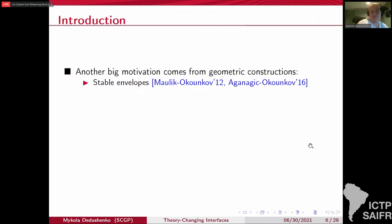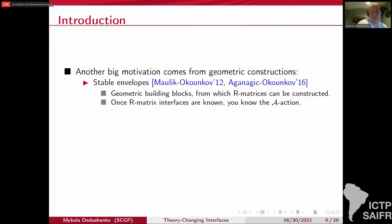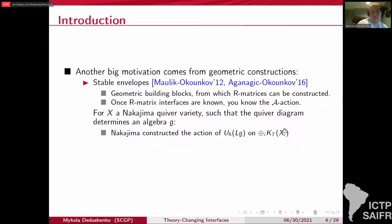Another big motivation comes from the geometric constructions, mainly the stable envelopes by Maulik-Okounkov and also Aganagic-Okounkov in the elliptic case, which are certain natural geometric building blocks from which you construct R matrices. Once you have R matrices, you know how this algebra A acts. And related constructions by Nakajima and Varagnolo, who constructed actions of Yangians and quantum loop algebras on the equivariant cohomology and K theory of Nakajima varieties.